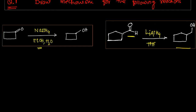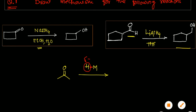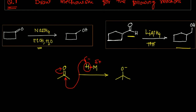Let me introduce what hydride ion transfer is. When any carbonyl compound is treated with a metal hydride complex, these complexes are similar to organometallic compounds because they have a negative charge on the hydrogen and the metal bears the positive charge. The hydride ion, via its sigma electrons, acts as a nucleophile and reacts with the sp2 hybridized carbonyl carbon, which is electrophilic in nature.